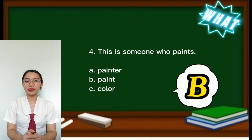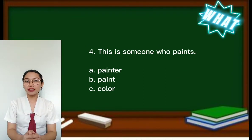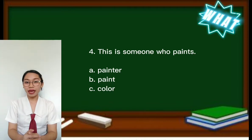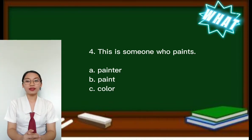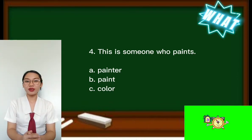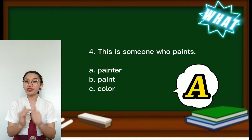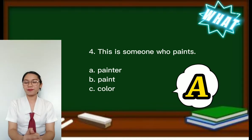Number 4. This is someone who paints. A. Painter, B. Paint, C. Color. What is your answer, kids? You selected the right answer. Good job! The answer is letter A.